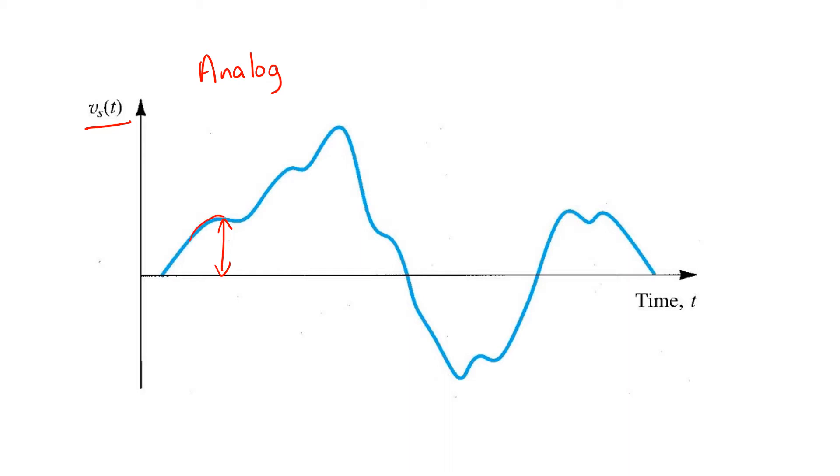You'll also notice that Vs is defined and can change at any point in time, so we call it a continuous time signal.